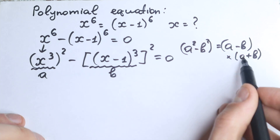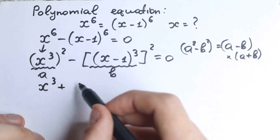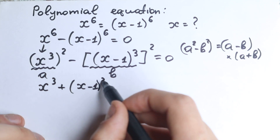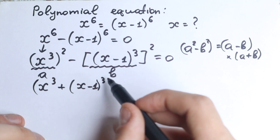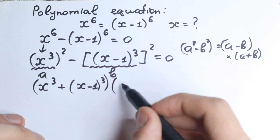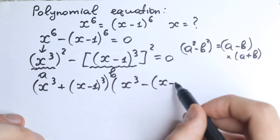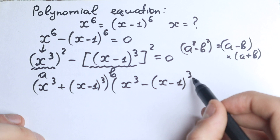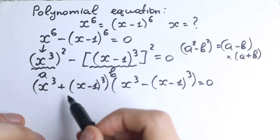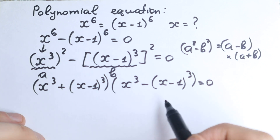Applying that rule, we get: (x cubed plus (x minus one) cubed) times (x cubed minus (x minus one) cubed) equals zero. Those are our two parentheses — a product of two factors.